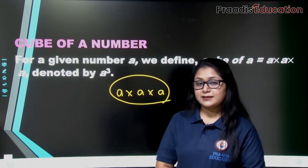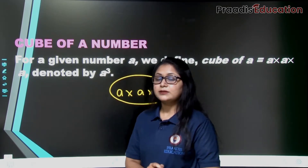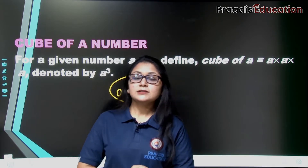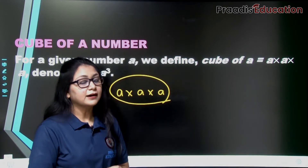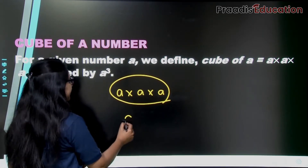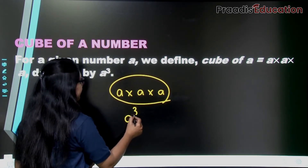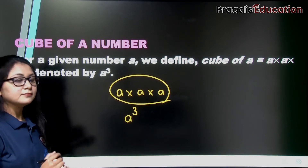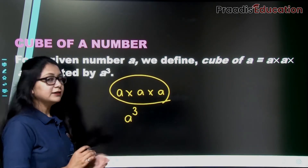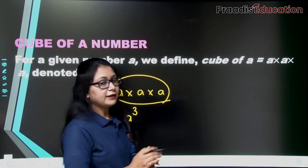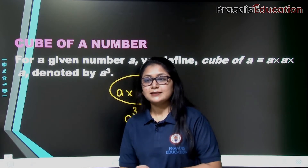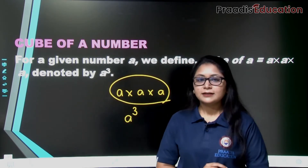In the case of squares, how did we denote it? We denoted it as a to the power 2. Similarly, whenever we find the cube of any number, we write it as a raised to the power 3. The base is the number and the exponent is 3. See how easy it is — that is the cube of a number.